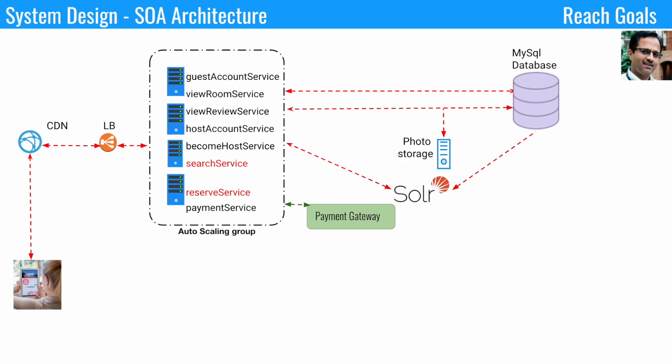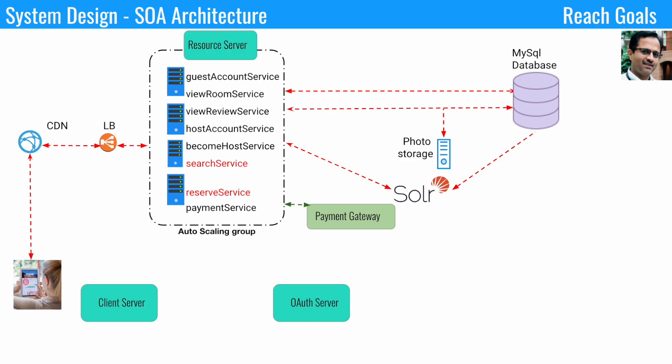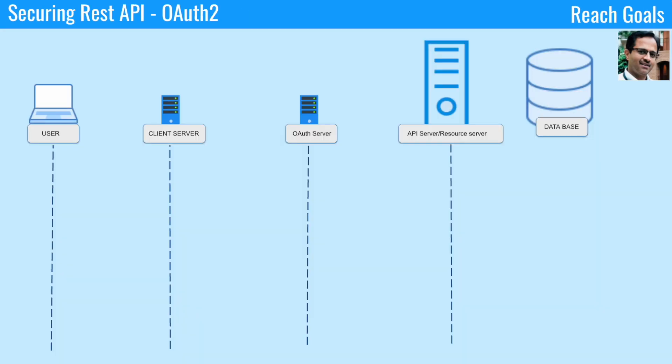To protect the REST API through OAuth 2, we need three important components. The first is the client server, which is a layer between the UI and the resource server. The resource server is also called the API server — the server hosting the RESTful APIs to be secured. The second is the OAuth server, which generates and stores OAuth tokens. The third component is the resource server, which hosts the REST API and can be an independent server depending on your architecture.